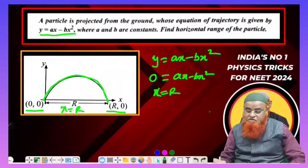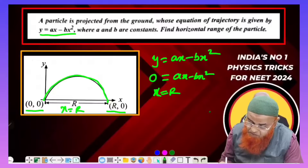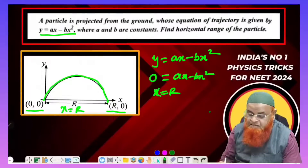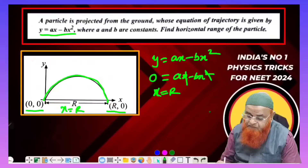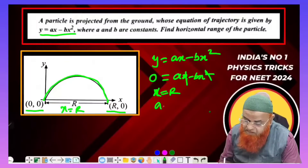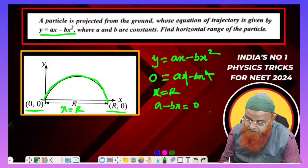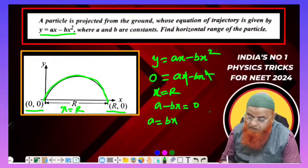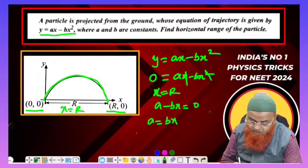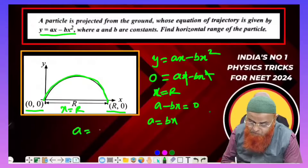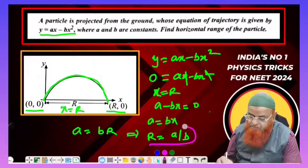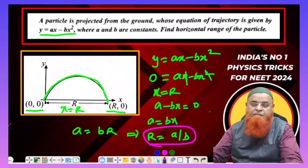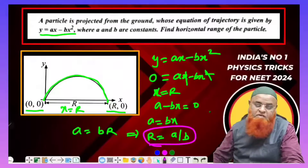From ax - bx² = 0, factoring out x gives a - bx = 0, so a = bx. Since x = R, we get R = a/b. Therefore, the range of the projectile is R = a/b.